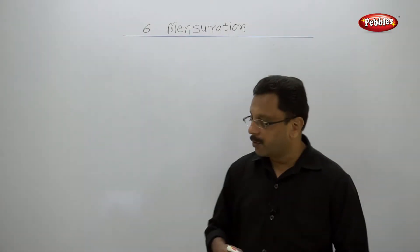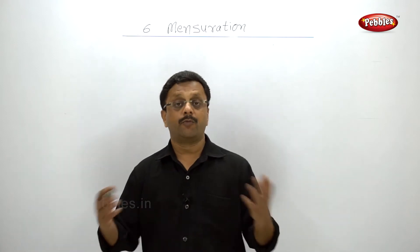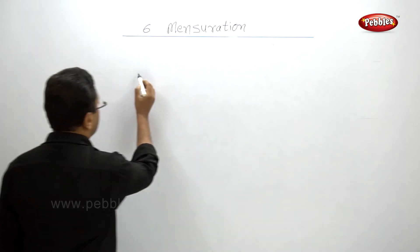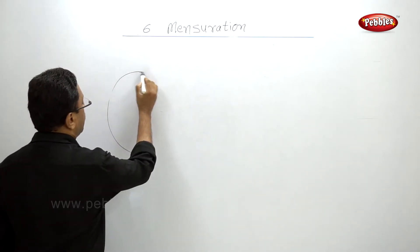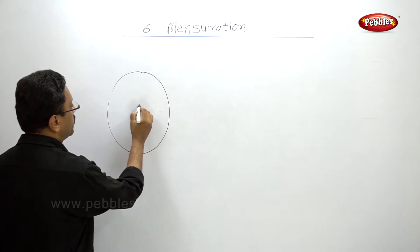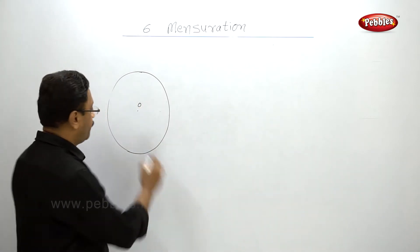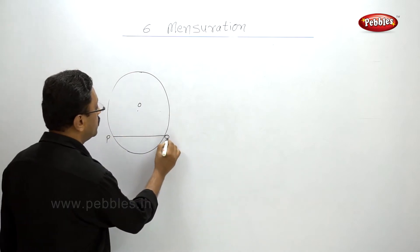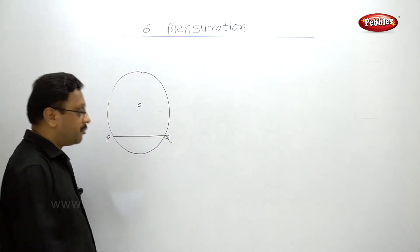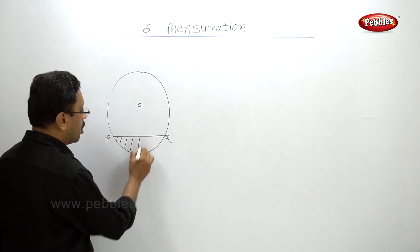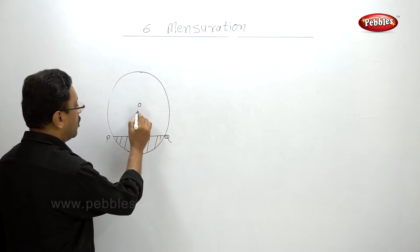Welcome back, now we are going to see the area of segment of a circle. What do you mean by segment of a circle? The segment is nothing but the area enclosed - if this is a center of circle and if this is any chord say PQ, the segment is area enclosed by the chord and arc of the circle.